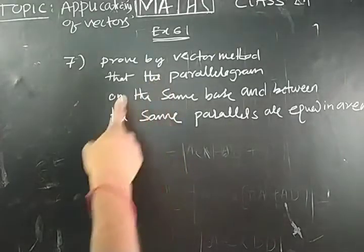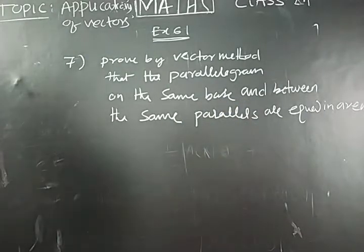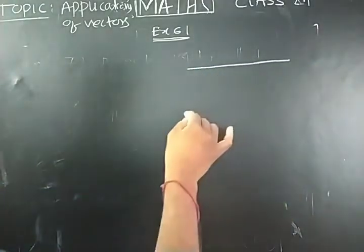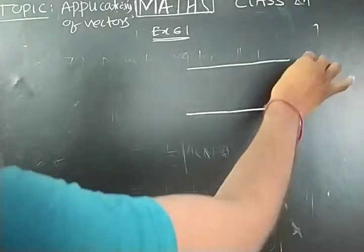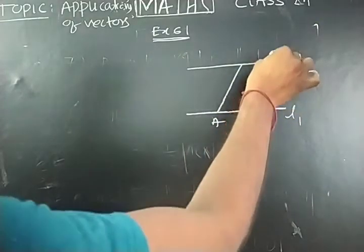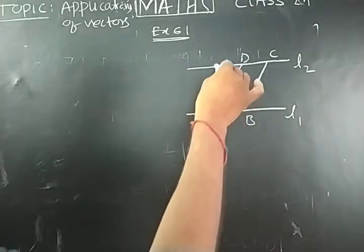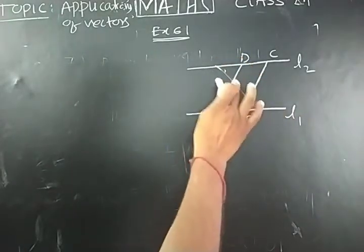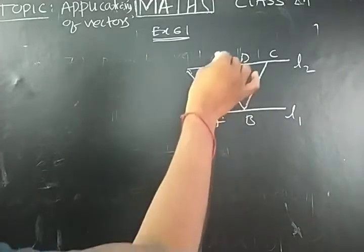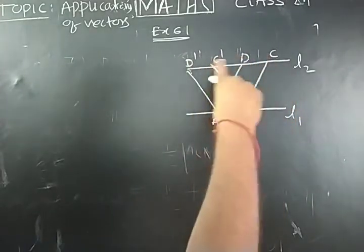So what is being said: the parallelograms on the same base between the same parallel lines — we are going to show their areas are equal. For that I will take one diagram. Suppose I am taking two parallel lines L1 and L2. I am taking one parallelogram with vertices ABCD between the two parallel lines, and another parallelogram on the same base AB, with vertices C dash and D dash.